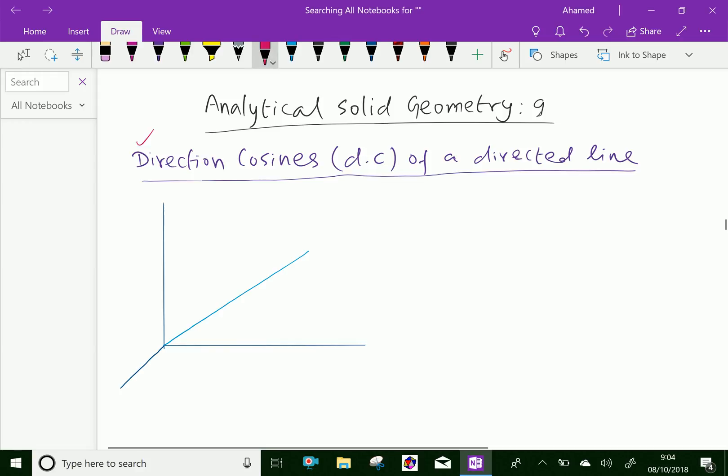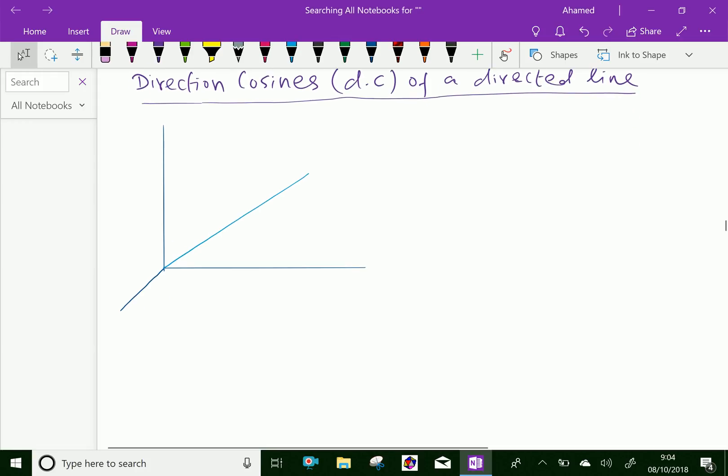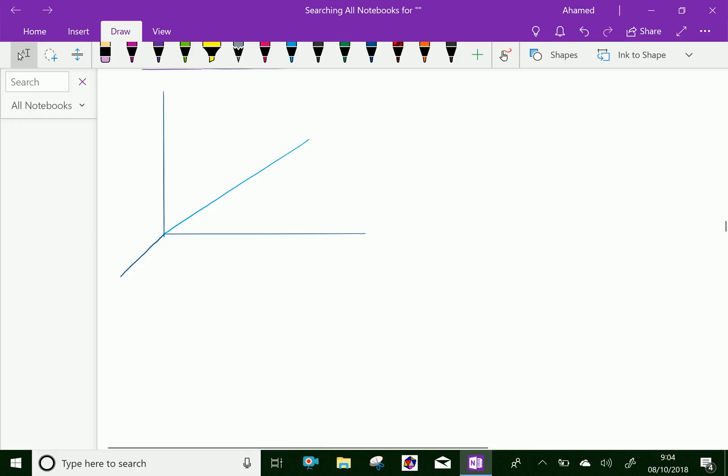Look at this figure. The three mutually perpendicular lines are given. Suppose this is O, the origin. This is the X axis, this is the Y axis, and this is the Z axis. Here, a line is drawn from the origin O to point P.